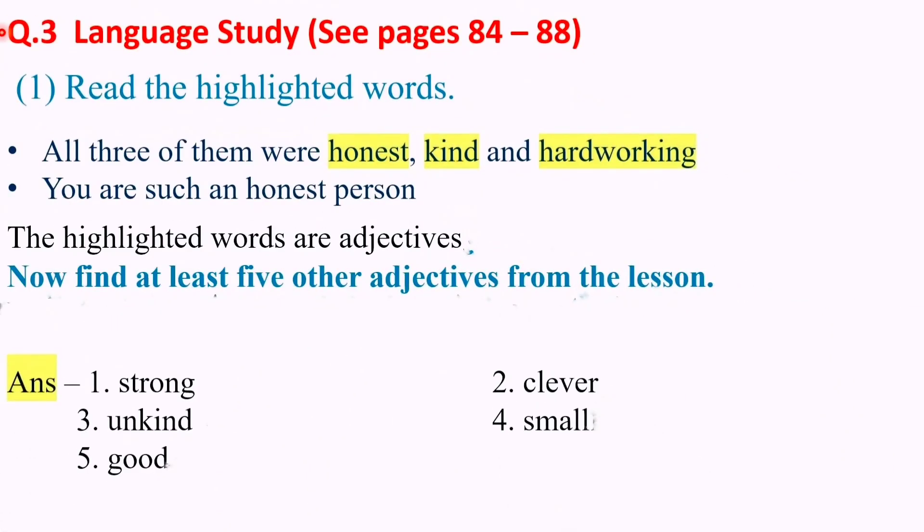Language study: Read the highlighted words. All three of them were honest, kind, and hard-working — the highlighted words are adjectives. Now find at least five other adjectives from the lesson. The adjectives found are: strong, clever, unkind, small, and good.